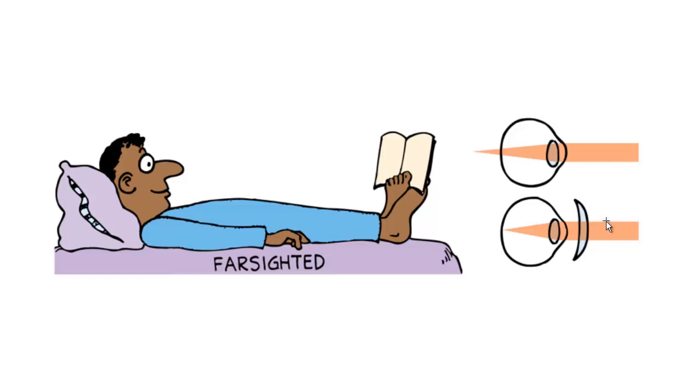We can correct that by putting a converging lens in front of the eye which further converges the light and makes it focus where it's supposed to on the back. These type of lenses can be bought at the drugstore for 10 to 20 dollars. You don't need a prescription. Commonly known as reading glasses. You maybe have a grandparent or a teacher who uses reading glasses. Fortunately it's something that most people go through as they get a little older.